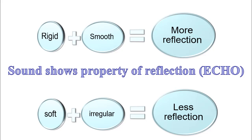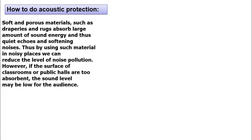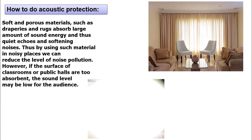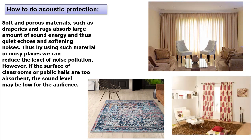How do we achieve acoustic protection? Soft and porous materials such as draperies and rugs absorb large amounts of sound energy, and thus quiet echoes and soften noise.